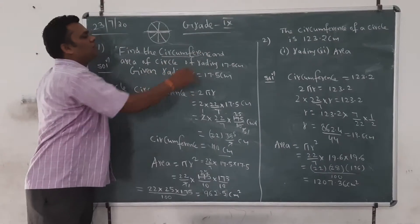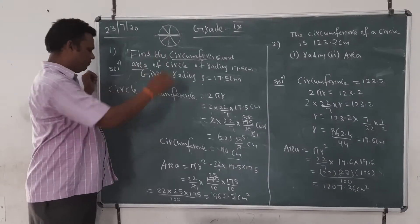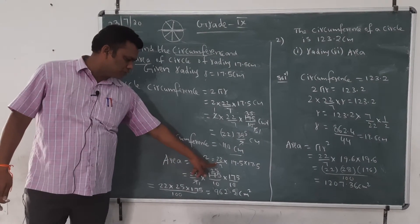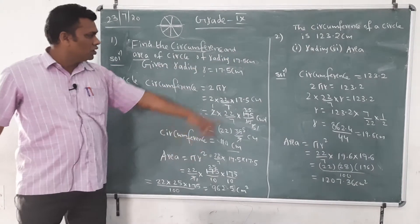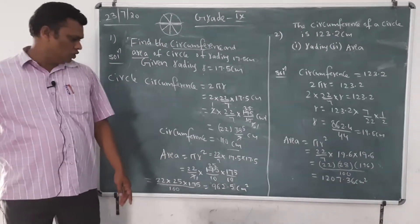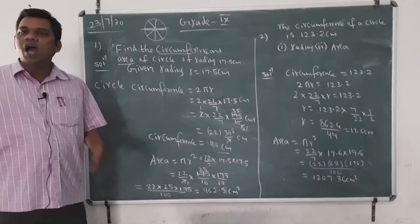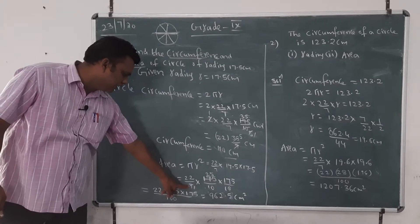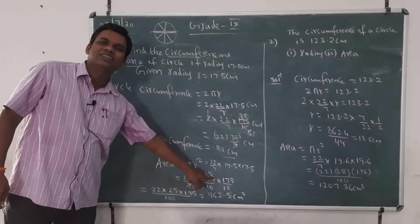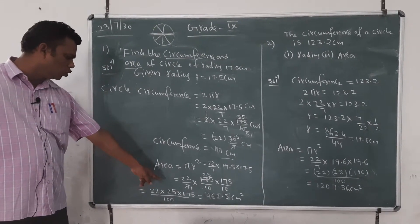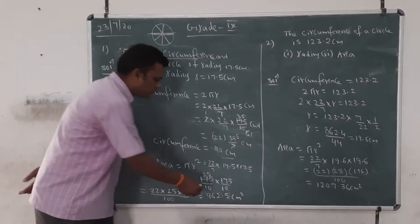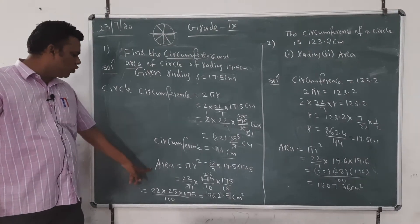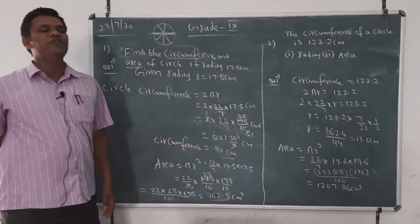The first part is complete — circumference is done. Now we find the area. The area of a circle formula is πr². So, area = (22/7) × (17.5)² = (22/7) × (175/10) × (175/10). Cancelling 7 into 175 gives 25, so we get 22 × 25 × 25 / 100 = 22 × 625 / 100 = 13750/100... which gives us 962.5 centimeters squared. Therefore, area = 962.5 cm².